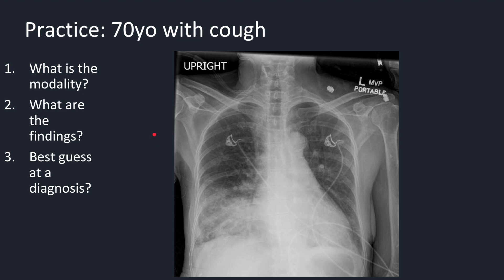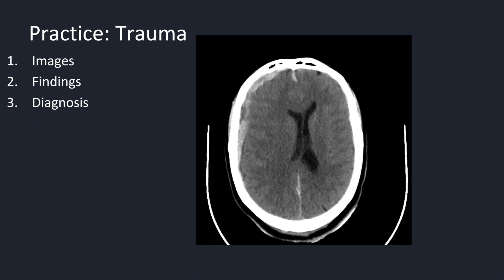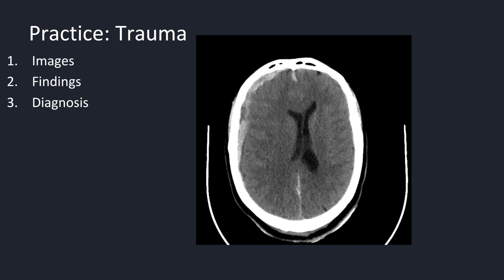For this first practice case: an opacity in the lower right lung obscures the right heart border; the diaphragm is well visualized however. This is a right middle lobe pneumonia. Next case: an axial slice through a non-contrast enhanced CT head shows a crescent-shaped hyperdensity in the right hemiconvexity, which exhibits mass effect by partially effacing the right lateral ventricle. There is associated sulcal effacement. This is a subdural hematoma, from unfortunately a gunshot wound.